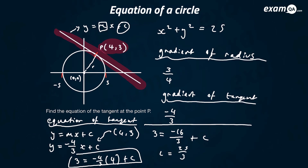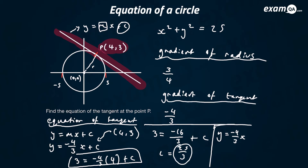We've finished the question. The question asked us to work out the equation of the tangent at point P. The equation of the tangent is y equals minus 4 over 3 x plus 25 over 3. This is a very typical question — you have to memorize how to do these types of questions.